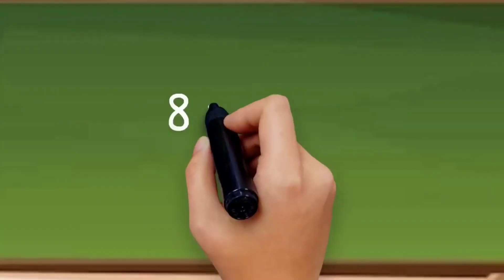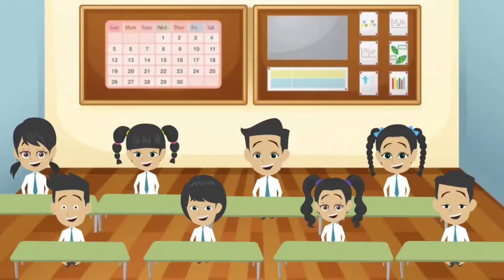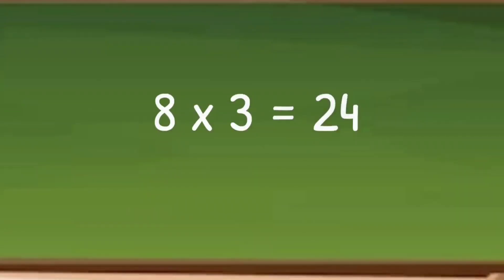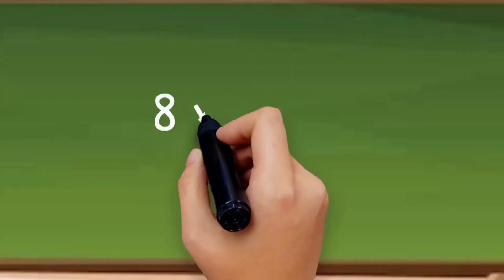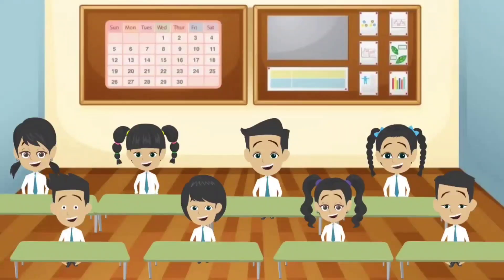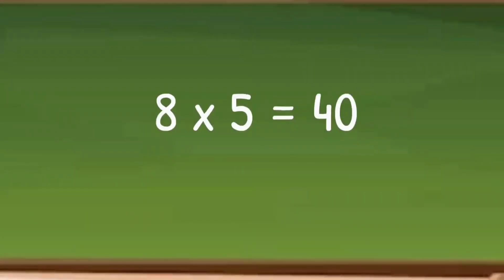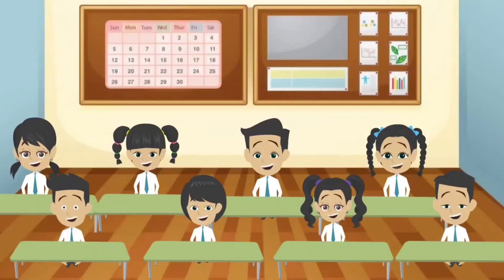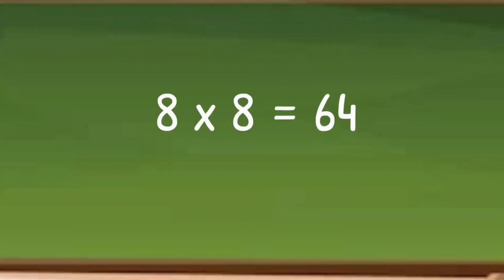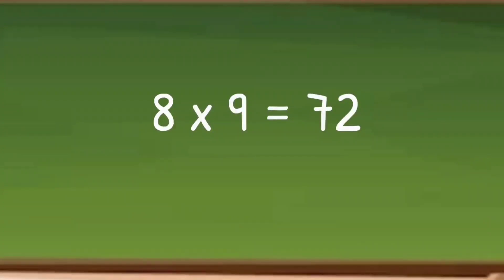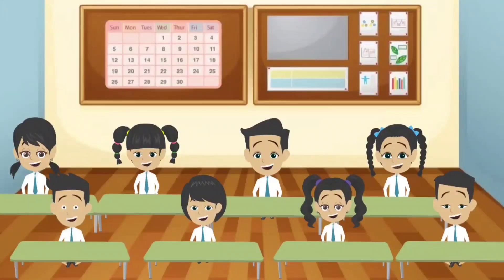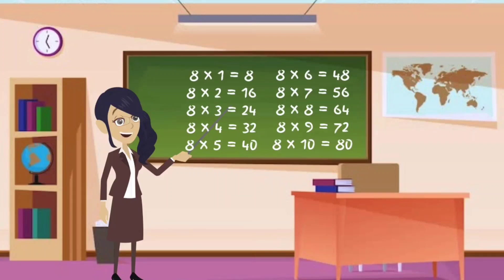Let's learn table of 8. 8 ones are 8. 8 twos are 16. 8 threes are 24. 8 fours are 32. 8 fives are 40. 8 sixes are 48. 8 sevens are 56. 8 eights are 64. 8 nines are 72. 8 tens are 80.